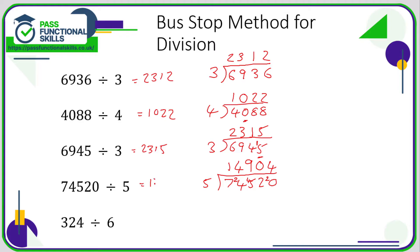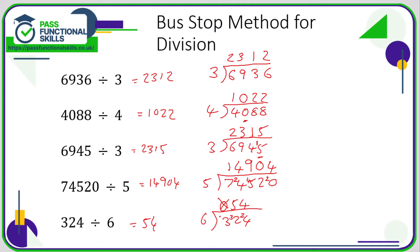The answer is 14904. Next: 324 divided by 6. The first number can't be divided by 6 because 3 is less than 6, so it's a zero — put the remainder of 3 onto the next number, exactly the same as when we put a zero above the 2 and moved it across. So a zero goes above the 3, and we move the 3 across. 32 divided by 6 is 5 with a remainder of 2. 6s into 24 is 4. The answer is 54 — the leading zero isn't doing anything.